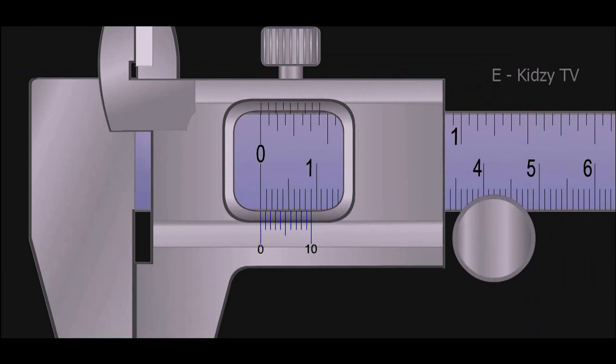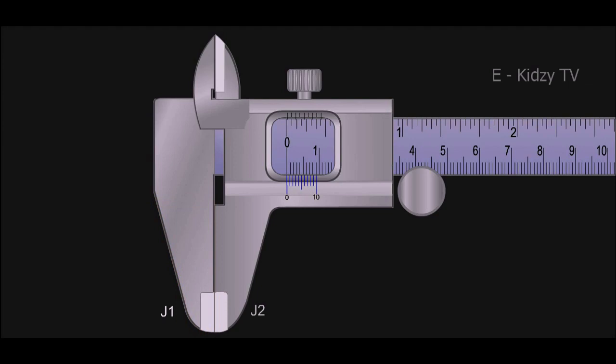This means that when jaws J1 and J2 are closed such that the total length of the N divisions on the Vernier scale is equal to N minus 1 divisions on the main scale.